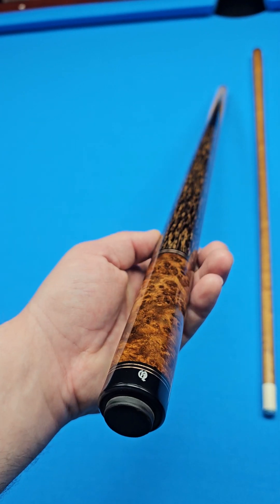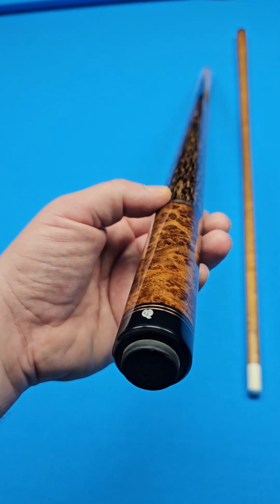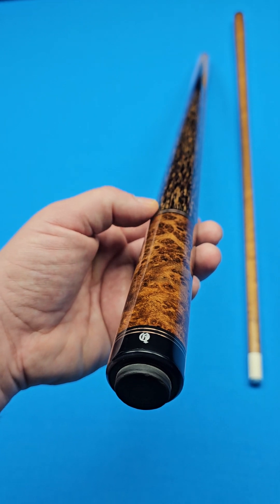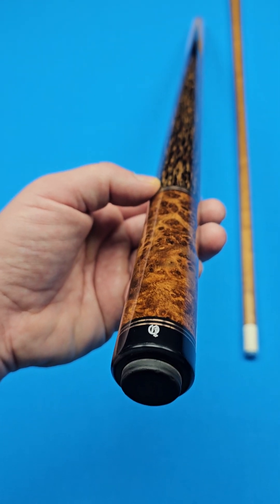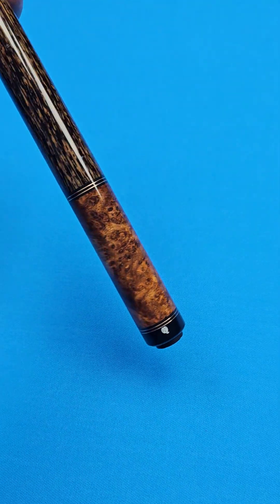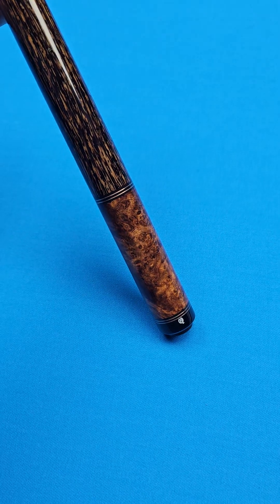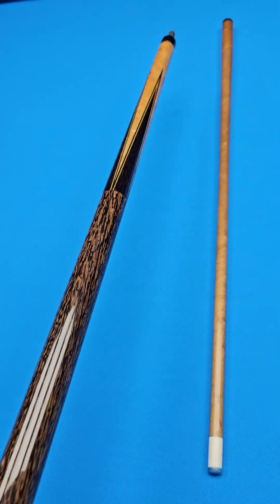But my favorite, favorite thing besides that slick handle about this cue, and Gabe does this a lot, check out the rings. You've got double copper rings in the butt sleeve on the bottom right there. Double copper rings. And then you've got a single copper ring at the joint. I think it just sets it off.